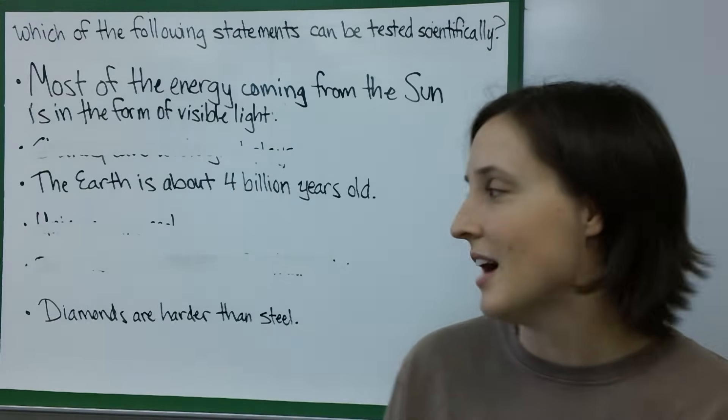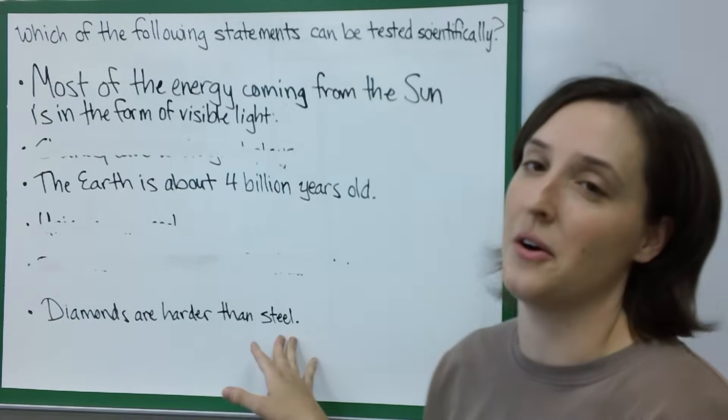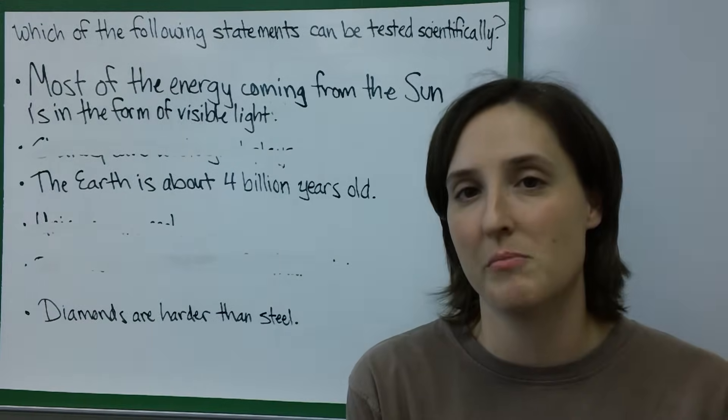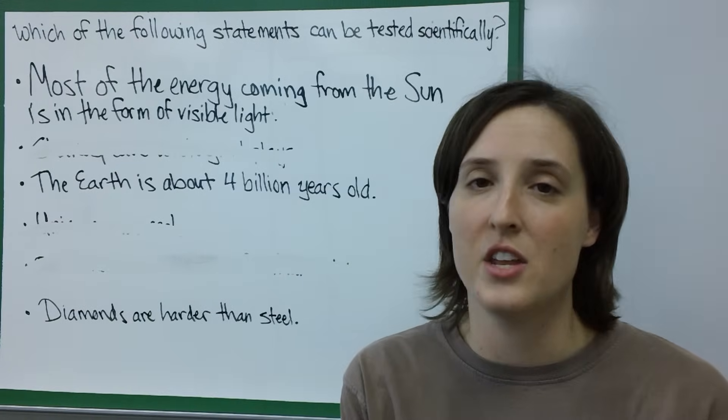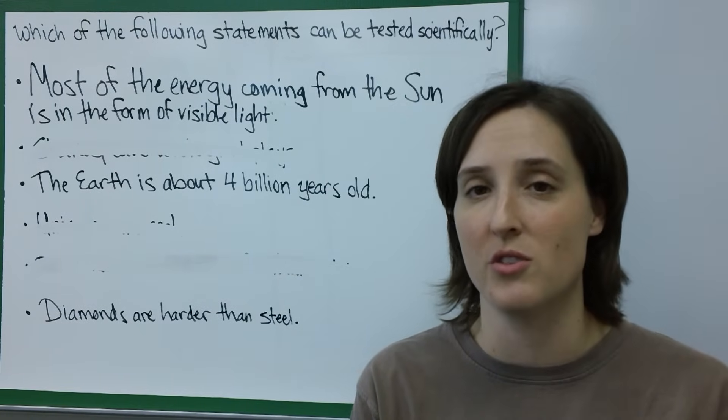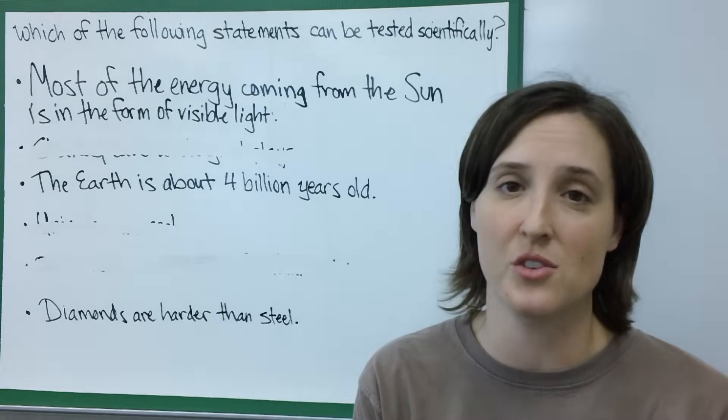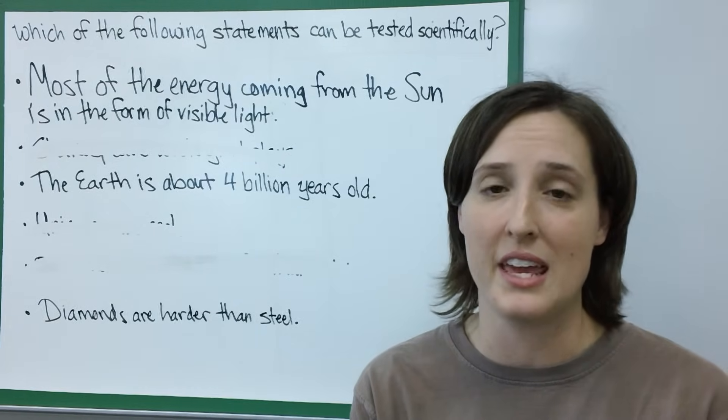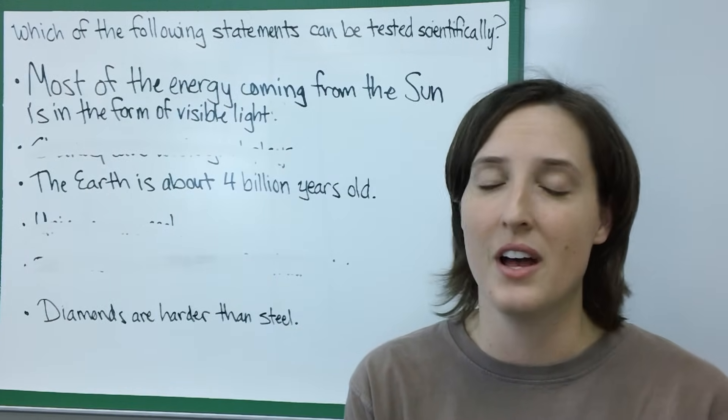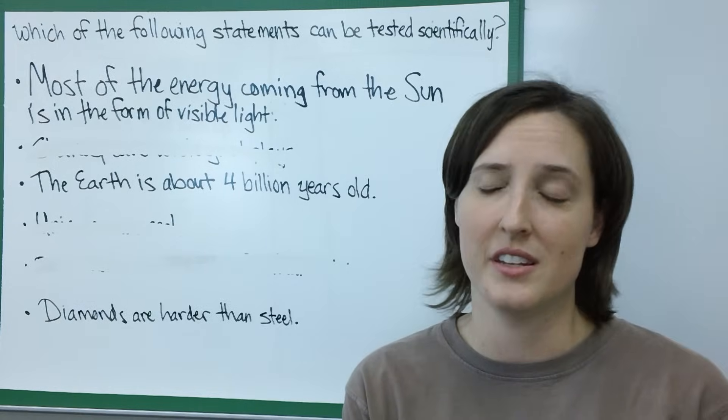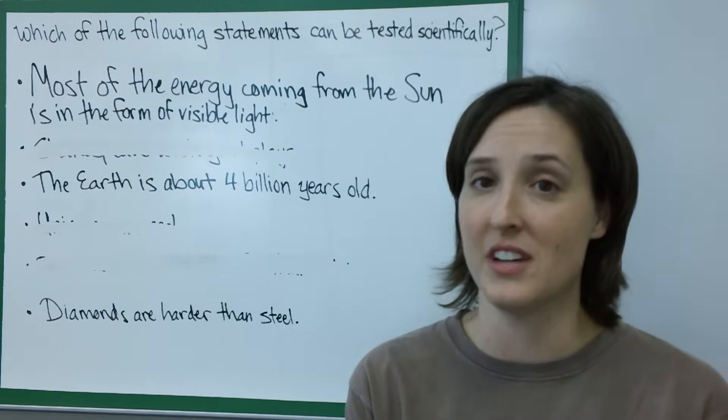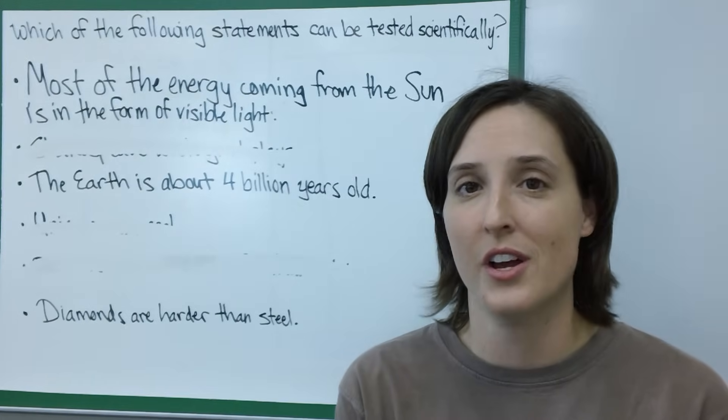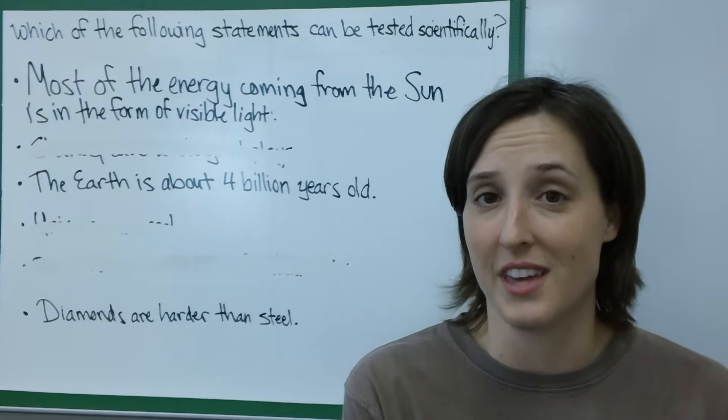The last one says diamonds are harder than steel. Now this one's pretty easy. There's the Mohs scale of hardness. You can actually do a scratch test where you scratch the object. So you scratch a diamond with something else like a penny or a piece of steel. If the steel gets scratched, then the diamond is harder. If the diamond gets scratched, the steel is harder. So we can actually prove that that is the case.